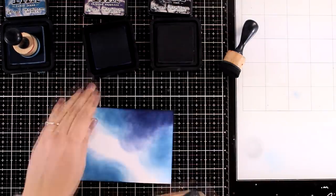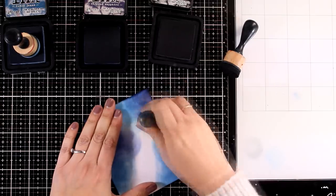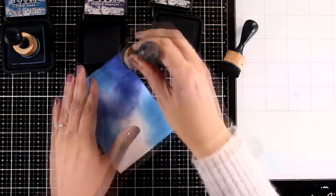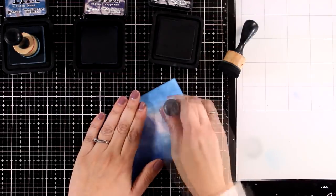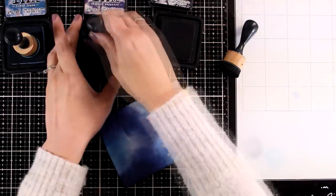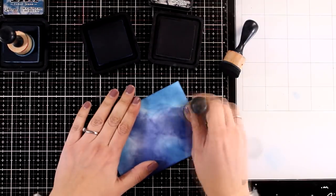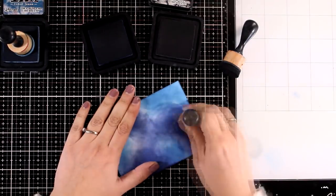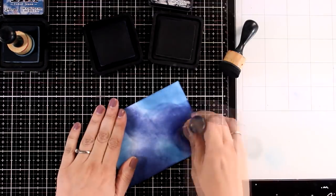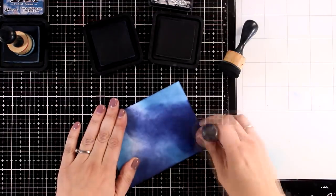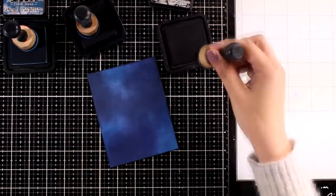The three colors that I'm working with are a dark blue which in this case is faded jeans, the chipped sapphire which is a mix between a very dark blue and purple, and finally I'm going to add some black soot. So to create that background all you have to do is mix those three colors and you go over the ink again and again until you over saturate it.